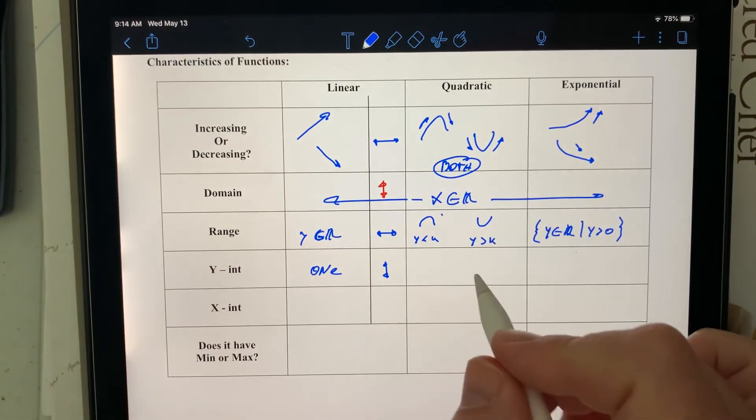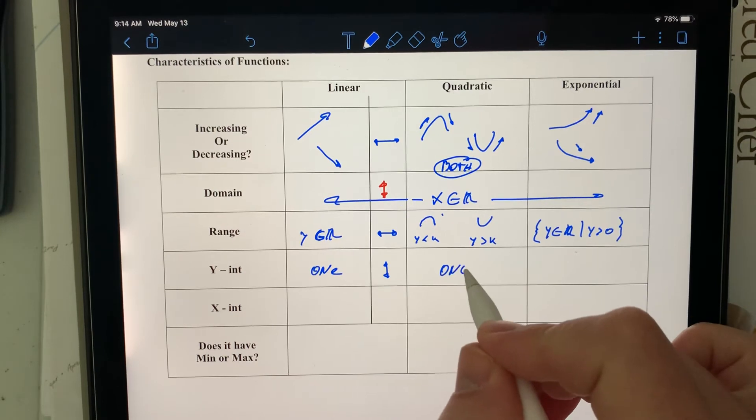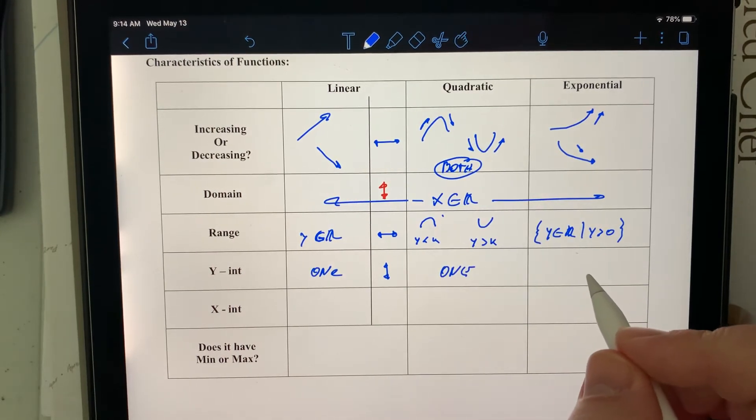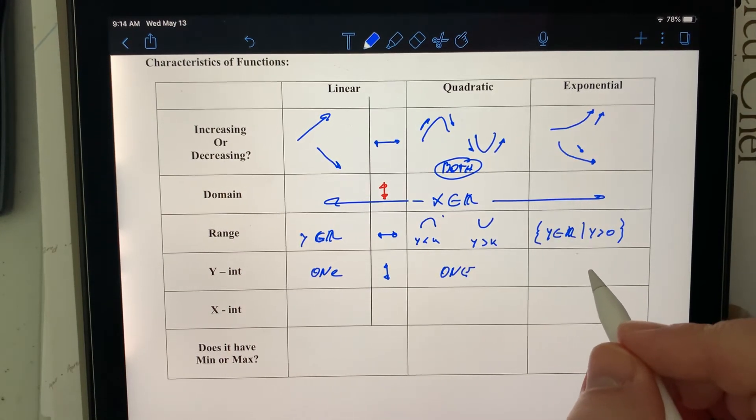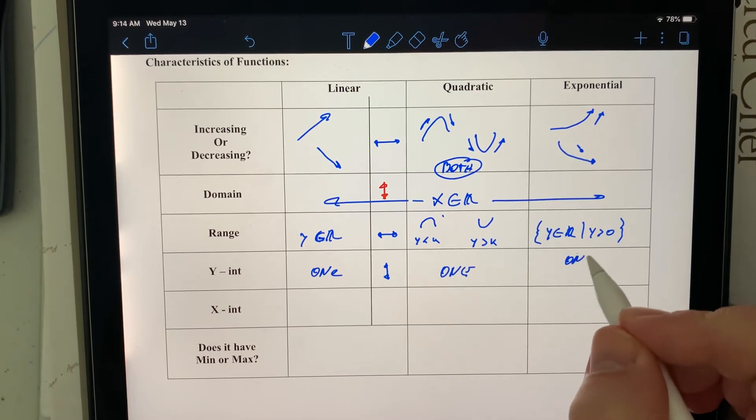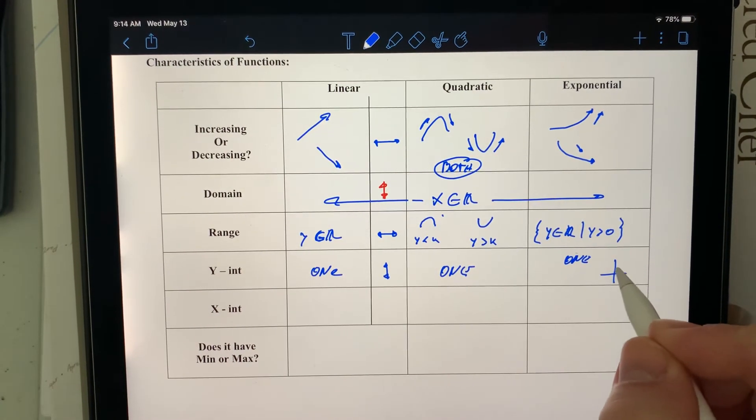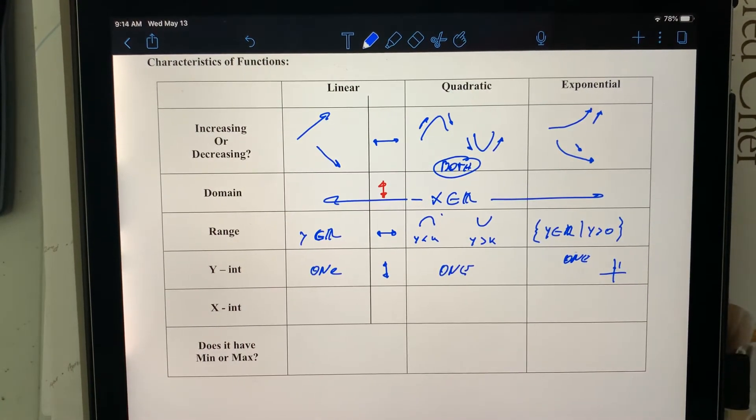Y-intercepts for quadratics, yes, it will always cross. And for exponential functions, yes, it only has one. And funny enough, they all cross as one, or the basic ones, because any number to the power of zero is equal to one.